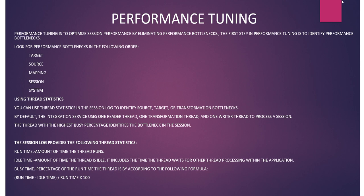You can find performance bottlenecks in target, source, mapping, session, and system. There are five areas where bottlenecks can occur. You can find bottlenecks using thread statistics — checking the source, target, or transformation. By default in Informatica Cloud, there is one transformation thread, one reader thread, and one writer thread. The formula is: (run time minus idle time) divided by run time, multiplied by 100.